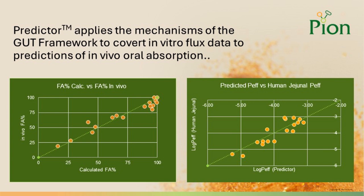Drug product predictions were compared to their fraction absorbed data published in literature and in public assessment reports, while predicted effective permeabilities of APIs were correlated with in vivo human jejunum permeability data. We have found excellent agreement in both cases, demonstrating the power of the flux assays in combination with the Predictor model.